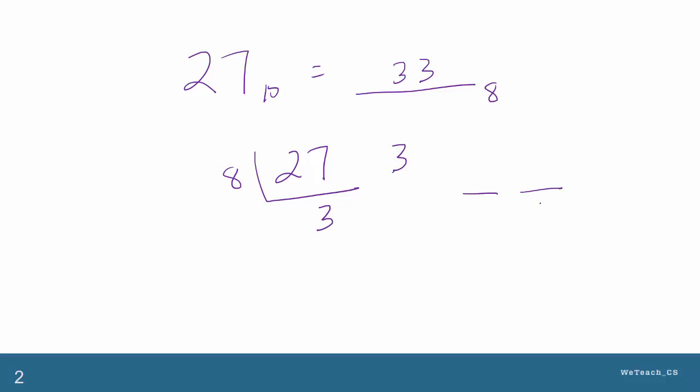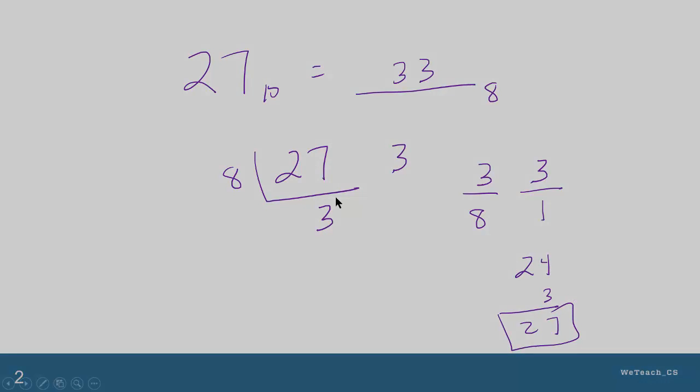We check it using the place value system. 3 goes in each place. 3 eights is 24. 3 ones is 3. That adds back to 27.